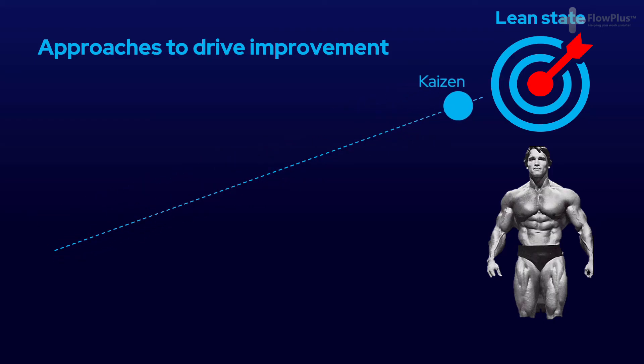Kaizen, or continuous improvement, explains the philosophy and journey towards this lean state — striving to continuously find ways to improve, cut waste and develop towards this lean position. Six Sigma is a specialist problem solving methodology focused on quality and variation reduction, and is one of many tools that can be used to help get towards this lean state.